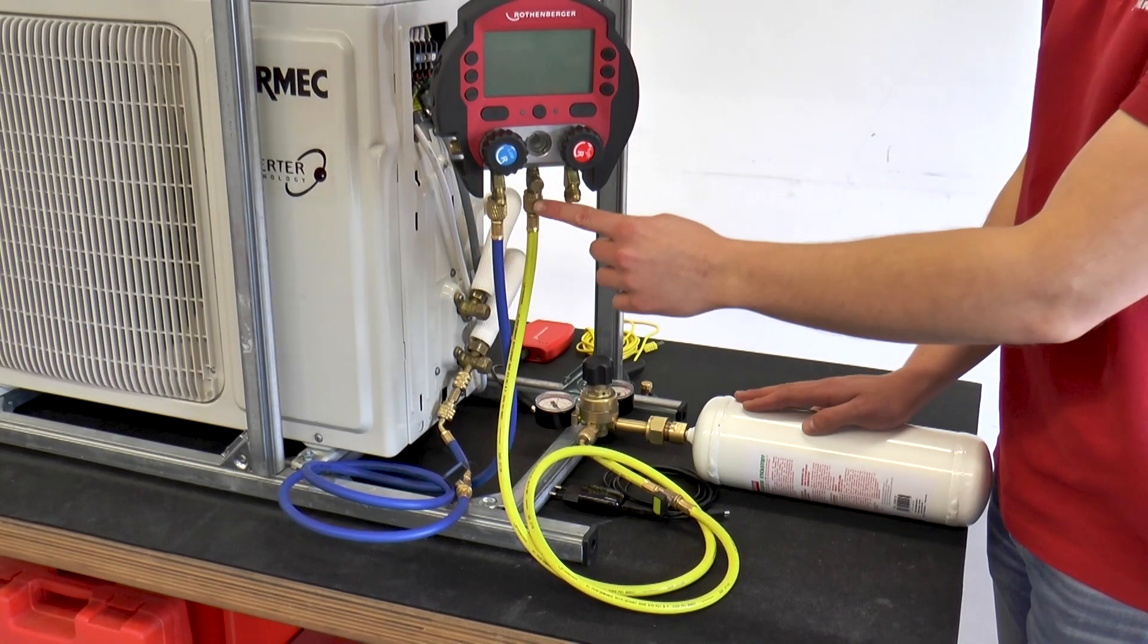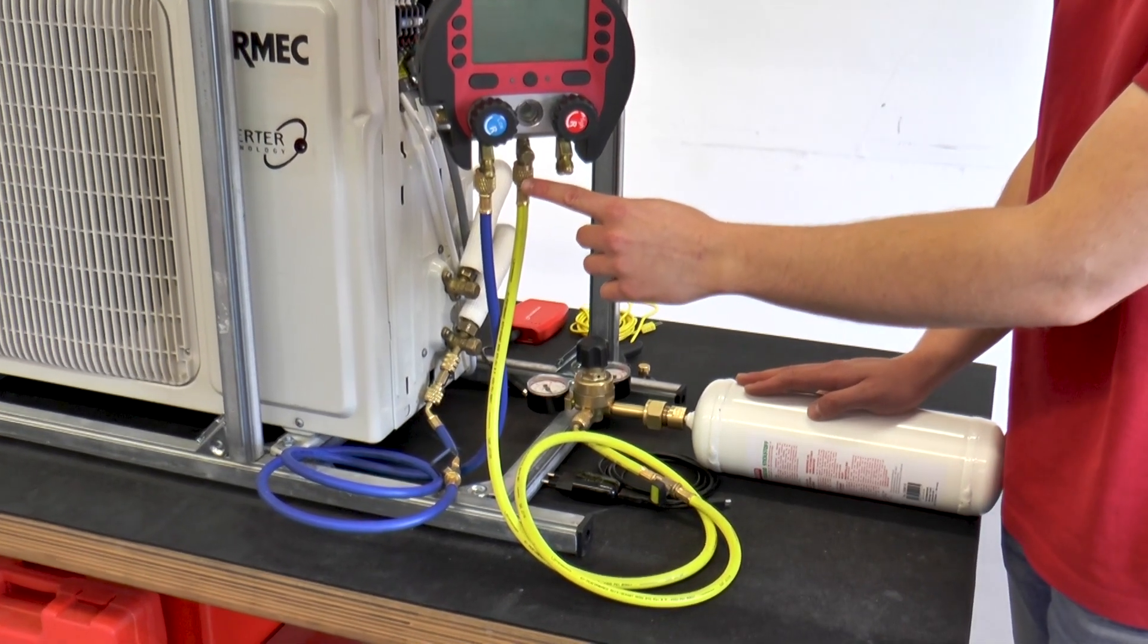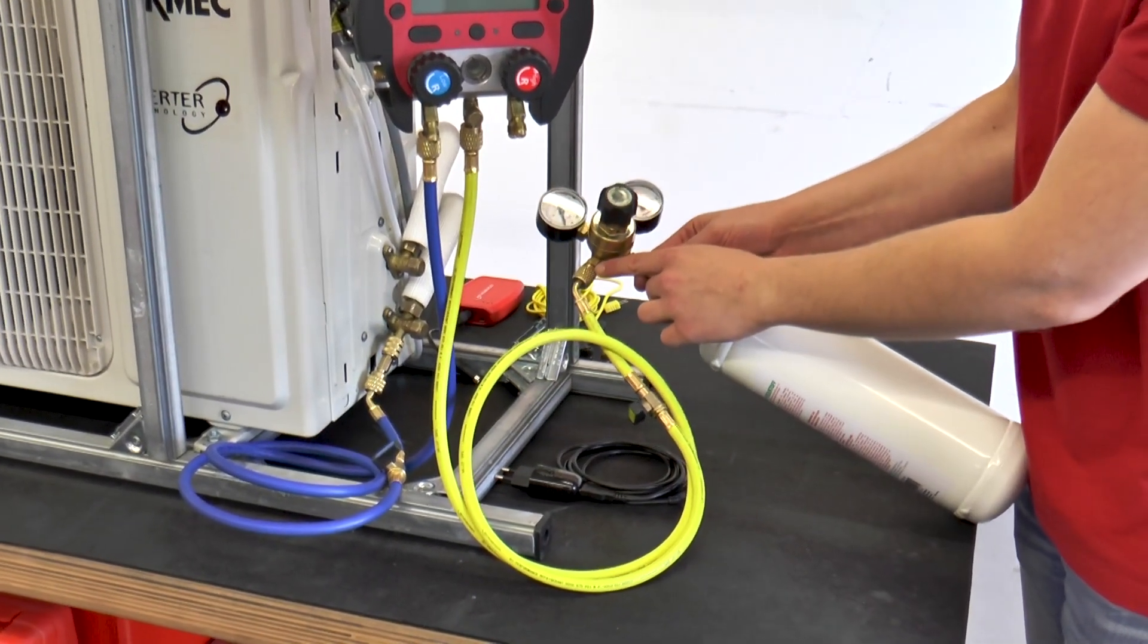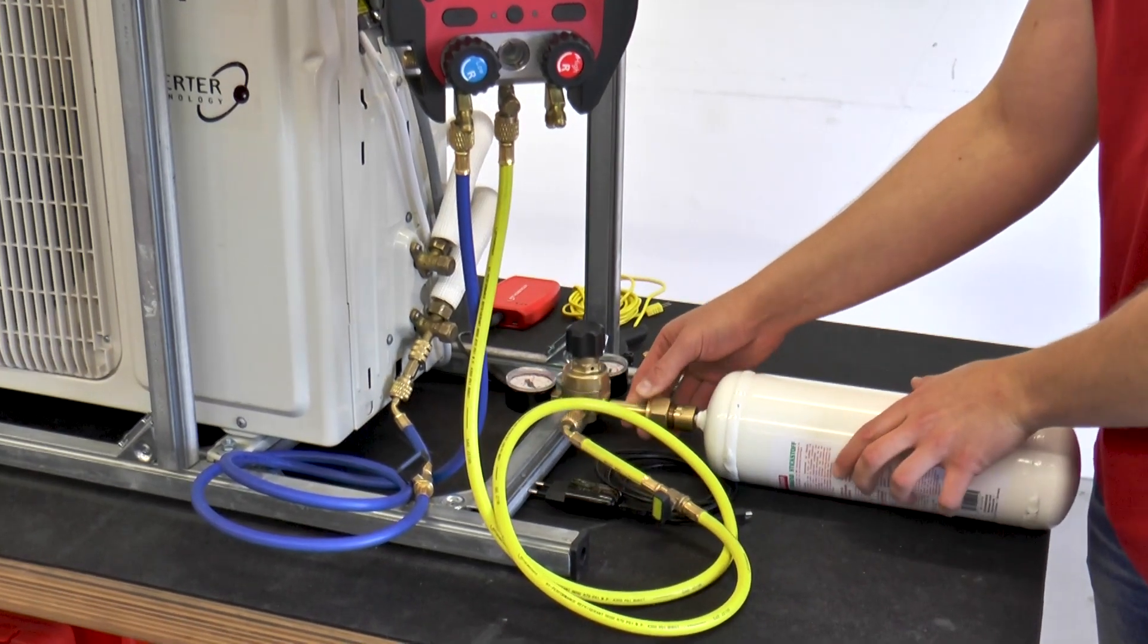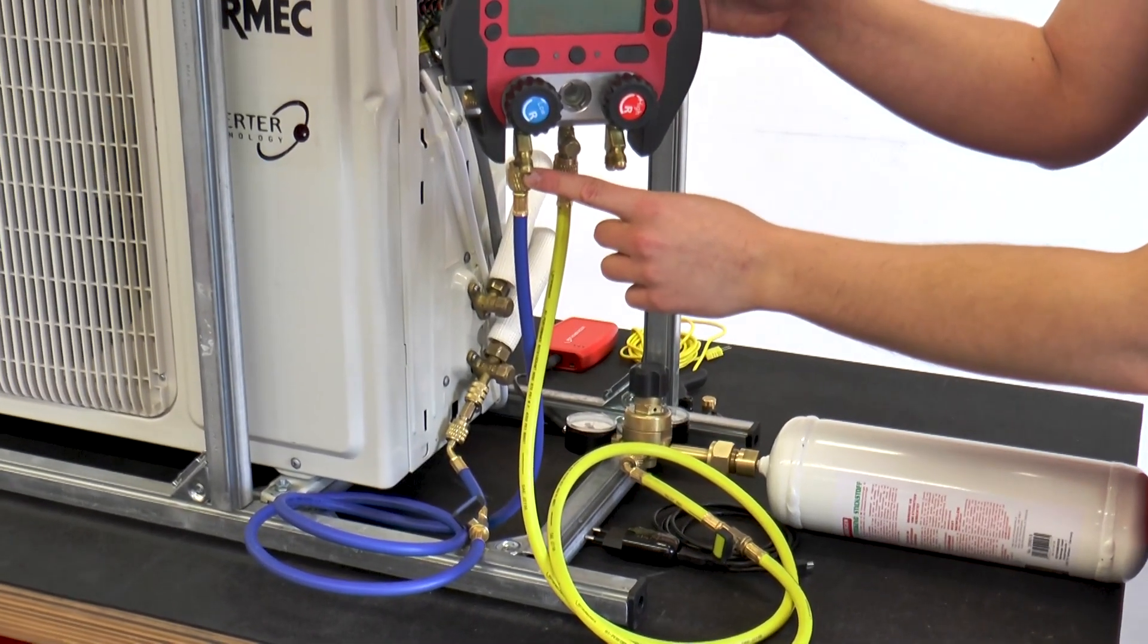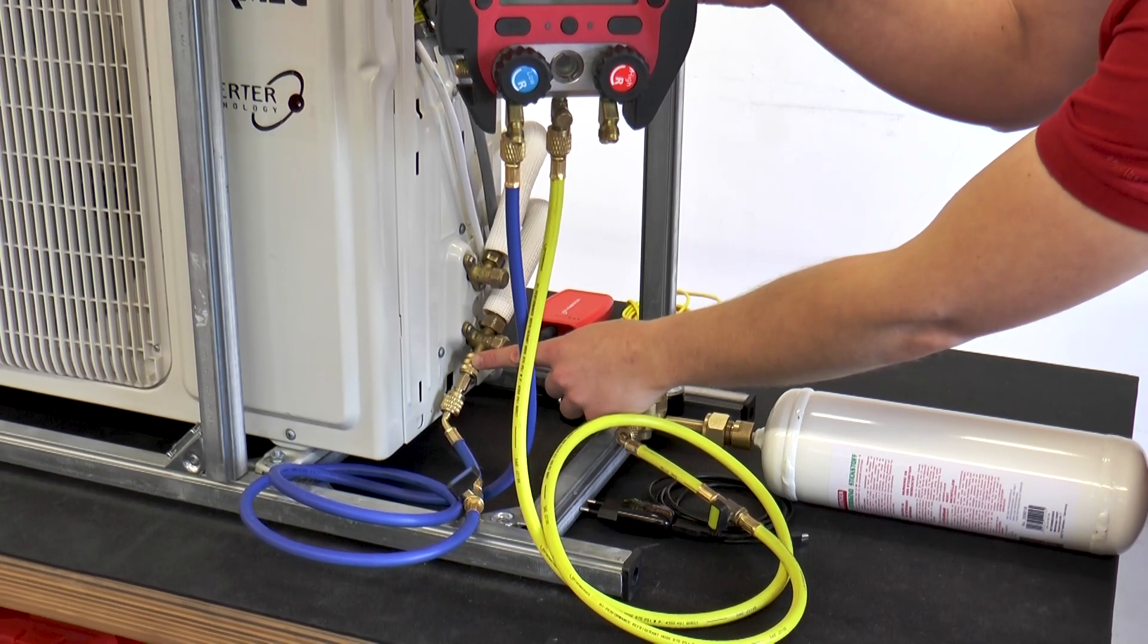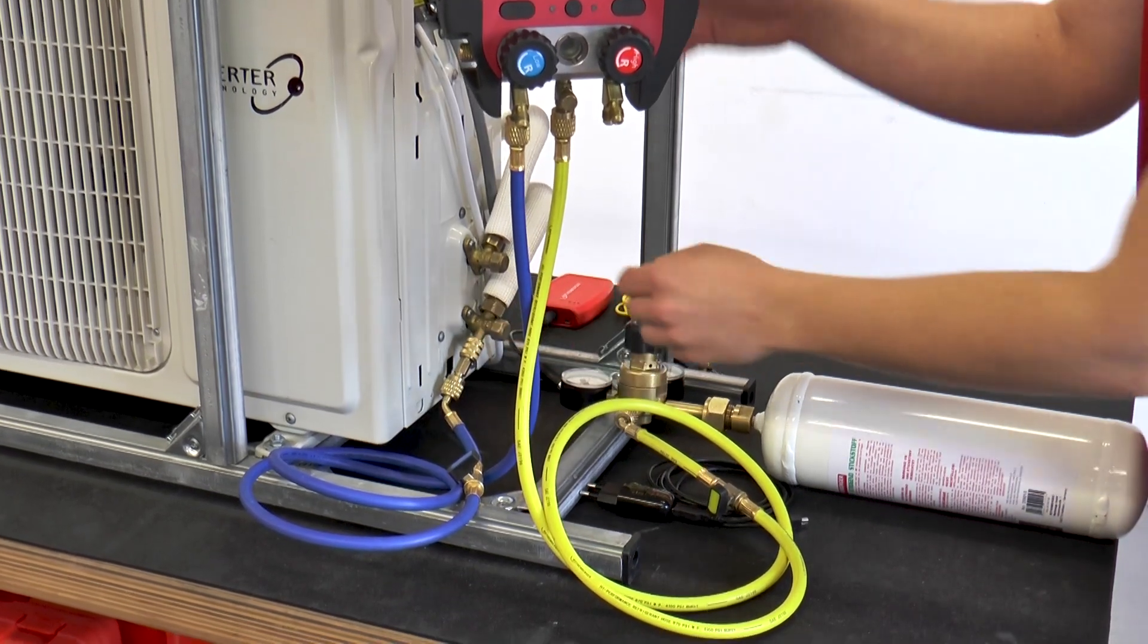Now the yellow working hose, which is connected to the middle connection of the Rokul, is attached to our pressure reducer. The blue working hose is attached to the low pressure side of the Rokul 600 and to the service valve of the air conditioner.